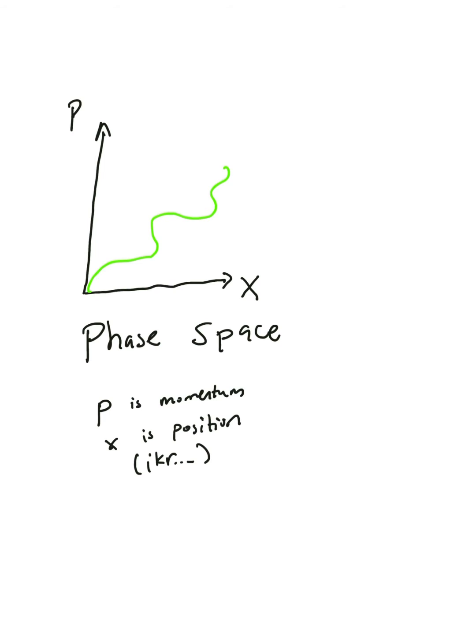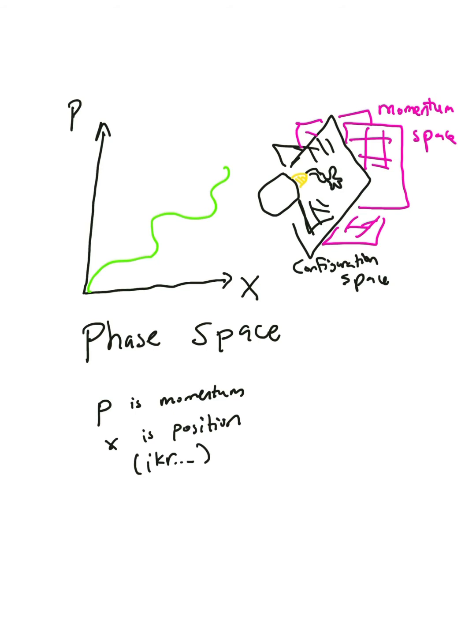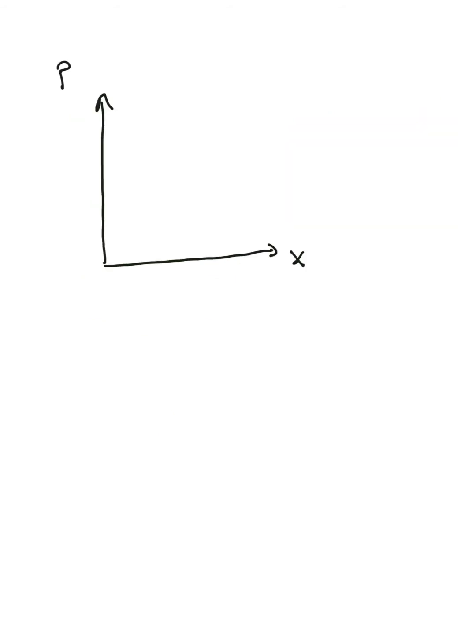You might be wondering, why do we care enough about the momentum of particles to make it another axis? While it is true that we can define the momentum of a particle by sticking with Newtonian mechanics and even Lagrangian mechanics, Hamiltonian mechanics makes the relationship between position and momentum much more explicit and much more intuitive by treating them as independent variables.